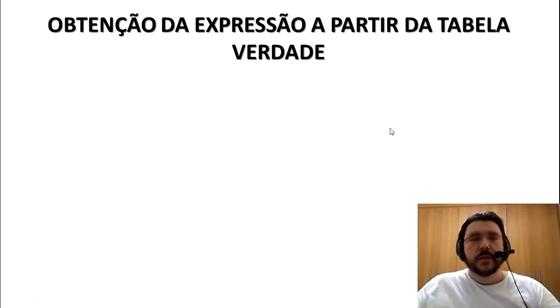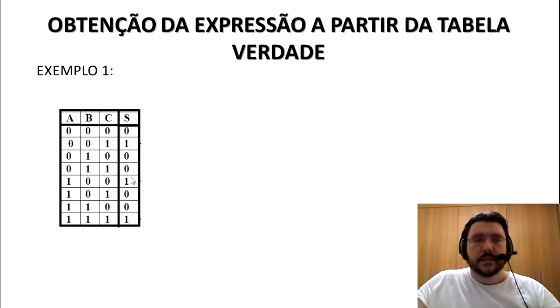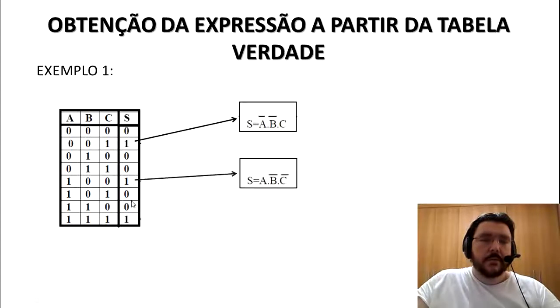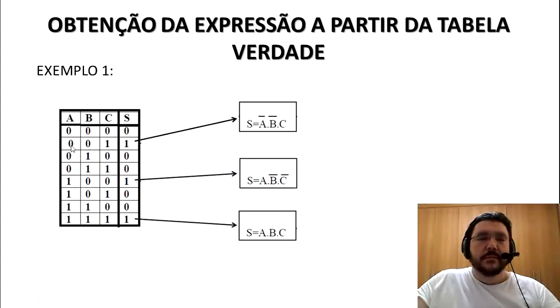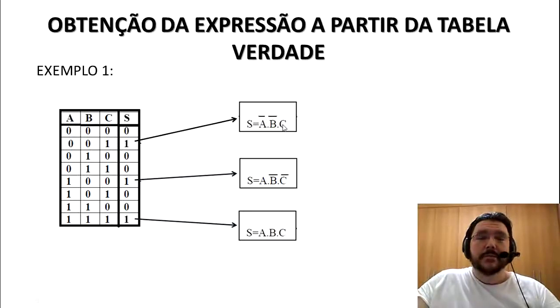Retomando o conteúdo sobre obter a expressão a partir da tabela verdade: se tivéssemos uma tabela verdade, procuraríamos onde a saída fosse igual a 1. Nesses casos, faríamos a multiplicação do A, do B e do C, com a seguinte condição: se o A fosse igual a zero, representaria como A barrado; se o B fosse zero, como B barrado; e se o C é 1, representa normal. Então ficou: A barrado vezes B barrado vezes C.